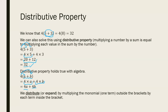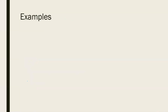The big difference from elementary school is that before, distributive property was given as an alternative to solving the question. Whereas now with variables, you are going to need to use it — you don't really have a choice. You will actually have to distribute because a lot of times in the brackets you won't be able to add up like terms. This is called distribution: when we multiply the monomial — the one term outside the brackets — by each term inside the brackets.